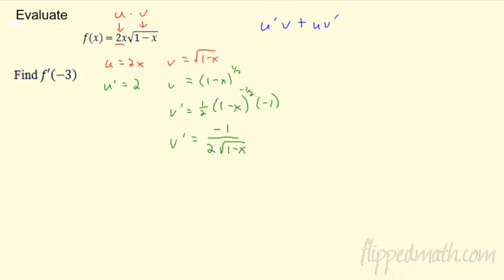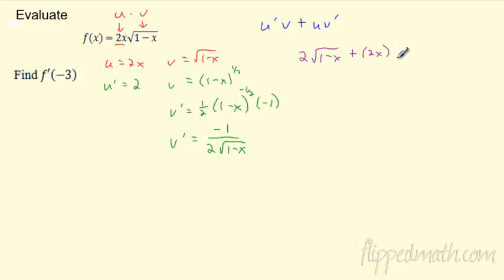Now let's plug that into our product rule. u' is 2, times v = √(1-x), plus u = 2x, times v' = -1/(2√(1-x)). It gets a little crazy, but don't freak out. You could clean it up if you want — your 2s cancel — but I recommend if you're evaluating at a point, just plug it in directly.